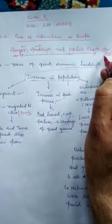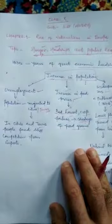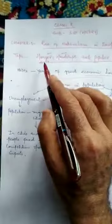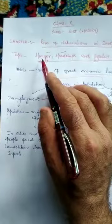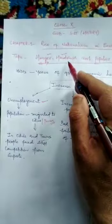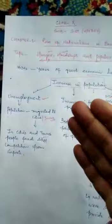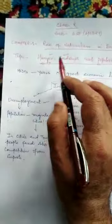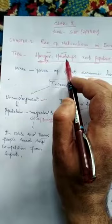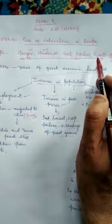In this topic, we are going to study first of all how the hunger crisis got created in Europe, how the situation of economic hardships emerged in France or in Europe, and how these two — shortage of food and economic hardships — resulted in revolts in France or in Europe.